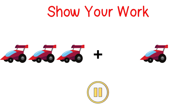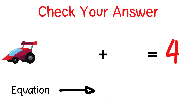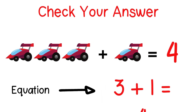Here's my picture of the three cars Jaden started with plus one more that his mother gave him. I'll pause here to give you a moment to see if you can add up all the cars. When I add three plus one more, the total is four. I can write an equation using numbers and symbols to model the problem: three plus one equals four.